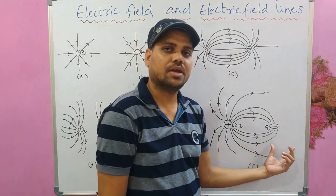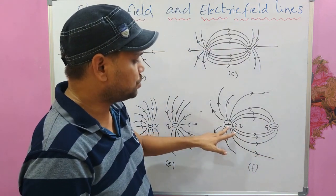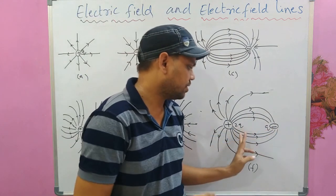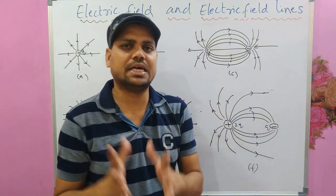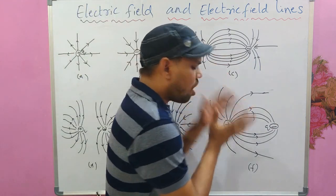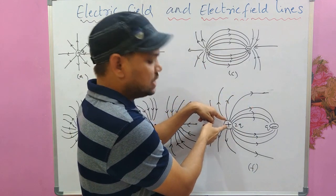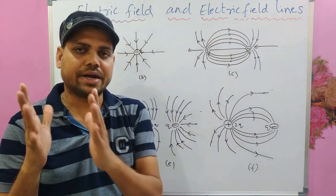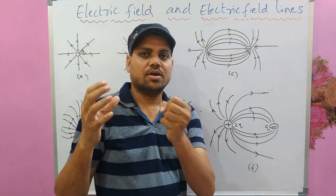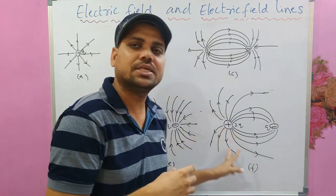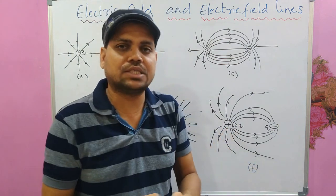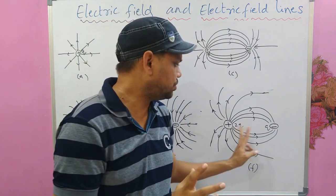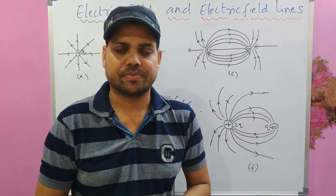The last example is very important: I have taken a plus 2Q charge and a minus Q charge. The magnitude of the charges is different. In this case, not all lines coming from the big charge enter the small charge. For example, if 100 lines come out from 2Q, then only 50 lines would enter Q. This shows that the magnitude of the charge also plays an important role.